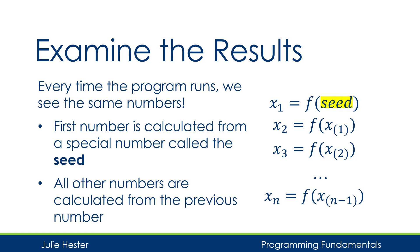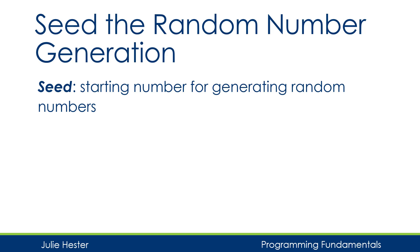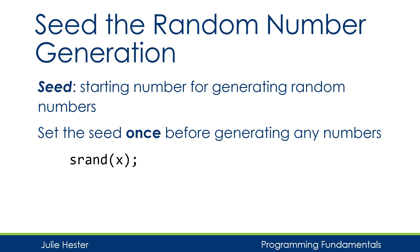This is something we need to add to our program. Let's see how we can seed the random number generation. The seed is going to be a starting number — it's not the number we're going to receive, it's just a number we give the function so that when we generate random numbers they'll be different from the last time we ran the program. We'll set this seed once at the beginning of the program by calling another function called srand.